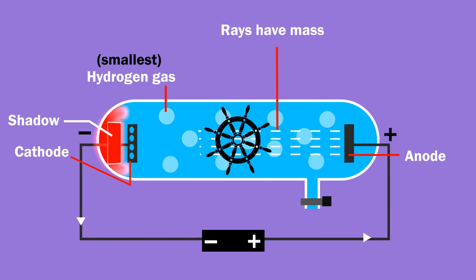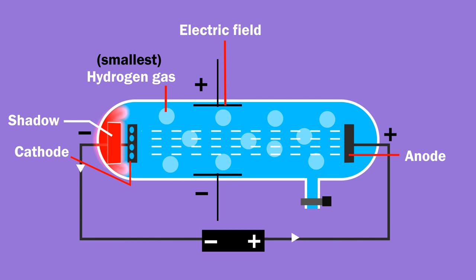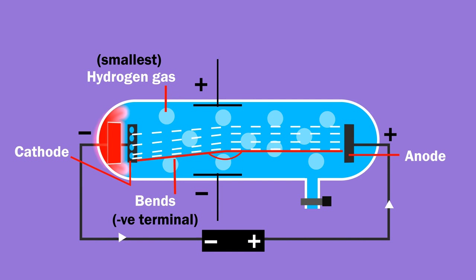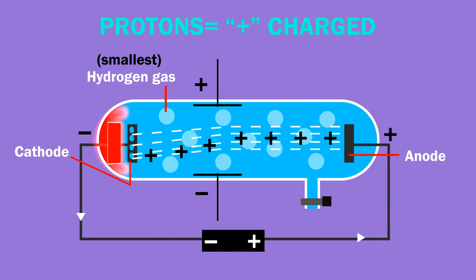Goldstein applied electric field from the sides of the tube and observed that rays bent towards the negative terminal. By this, he concluded that anode rays or protons are positively charged.